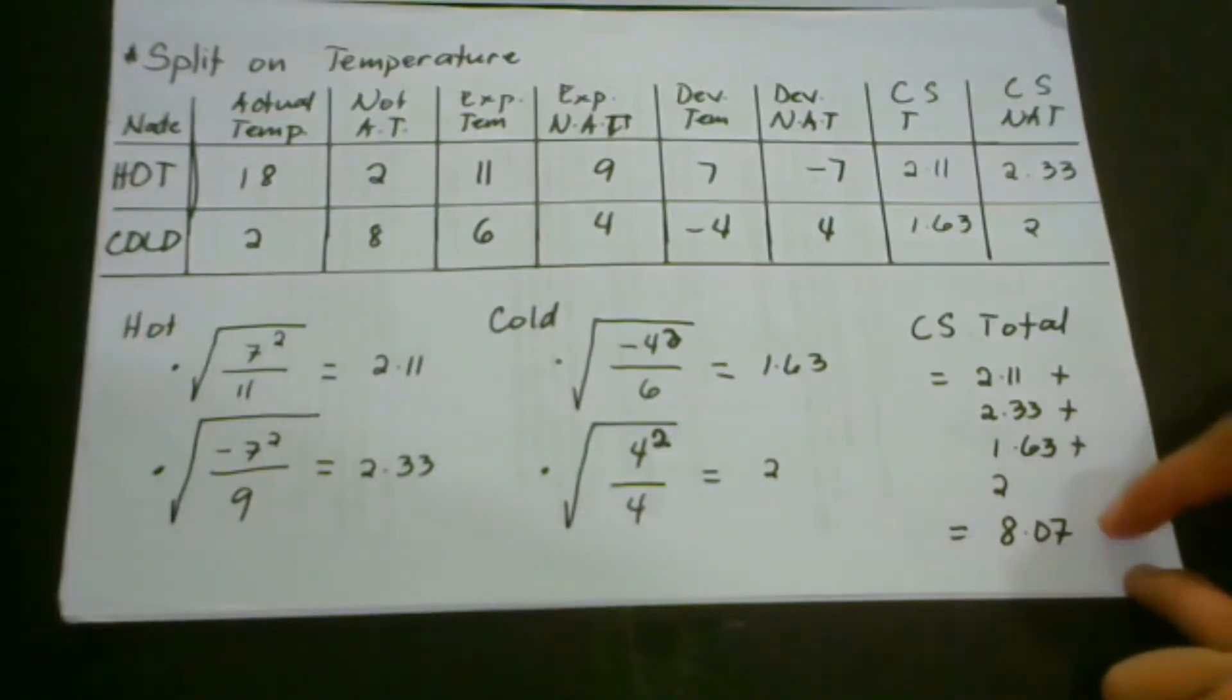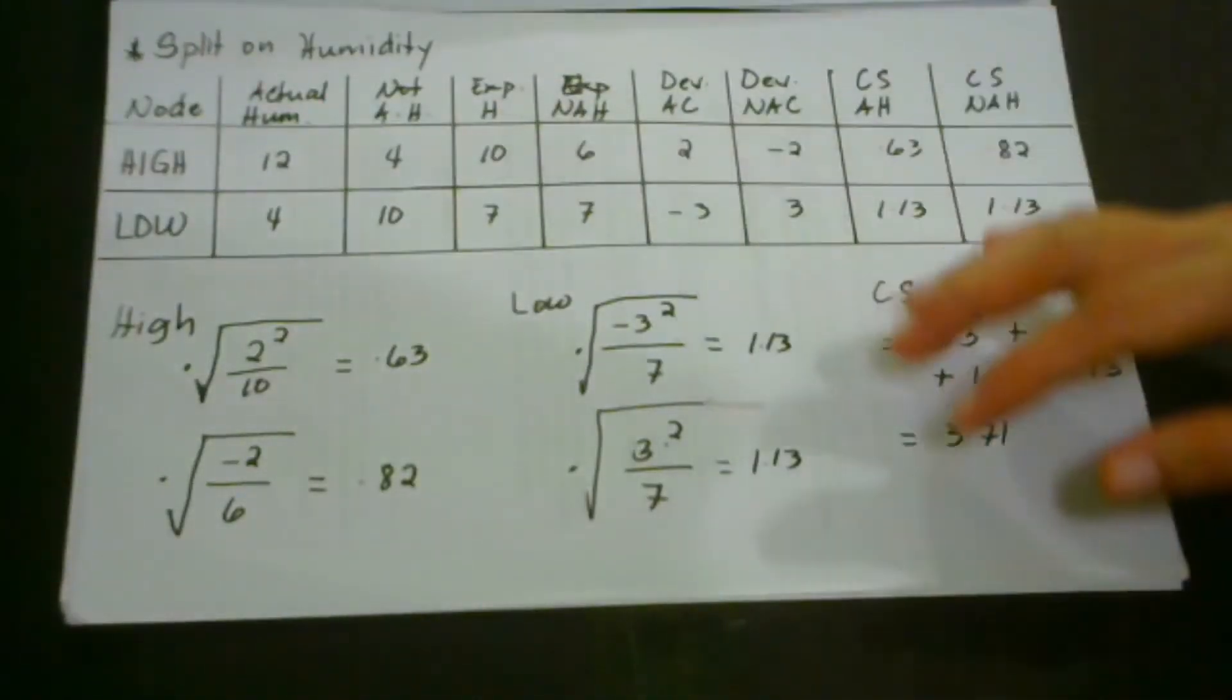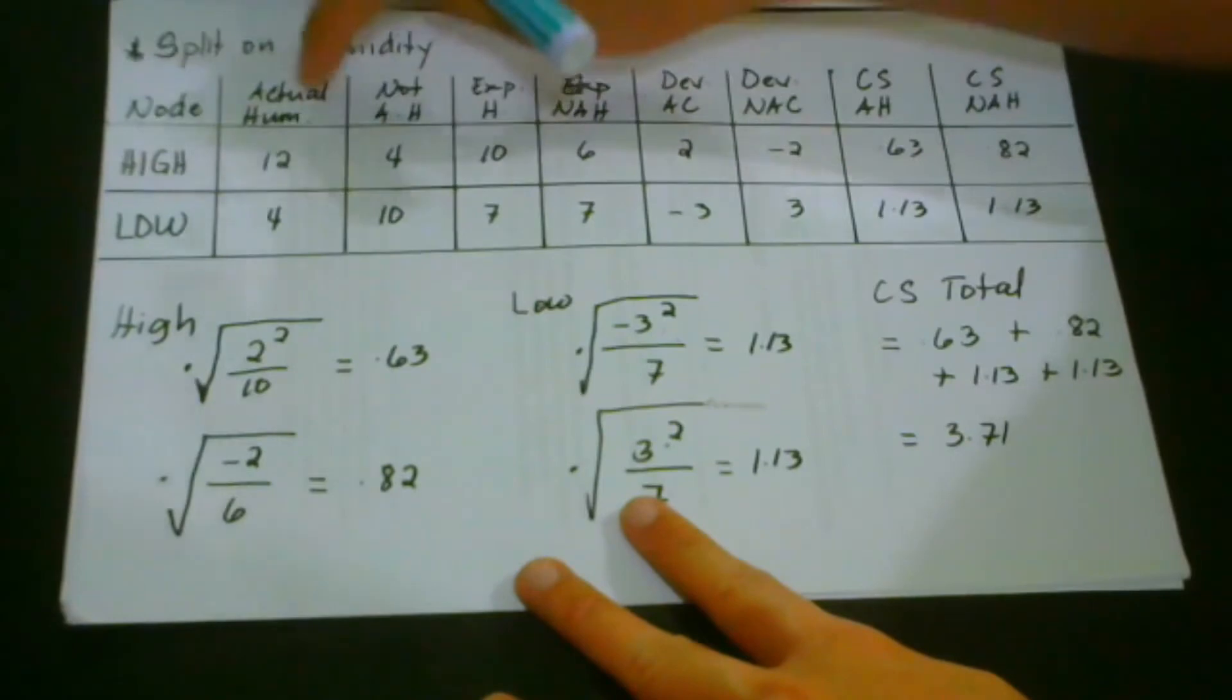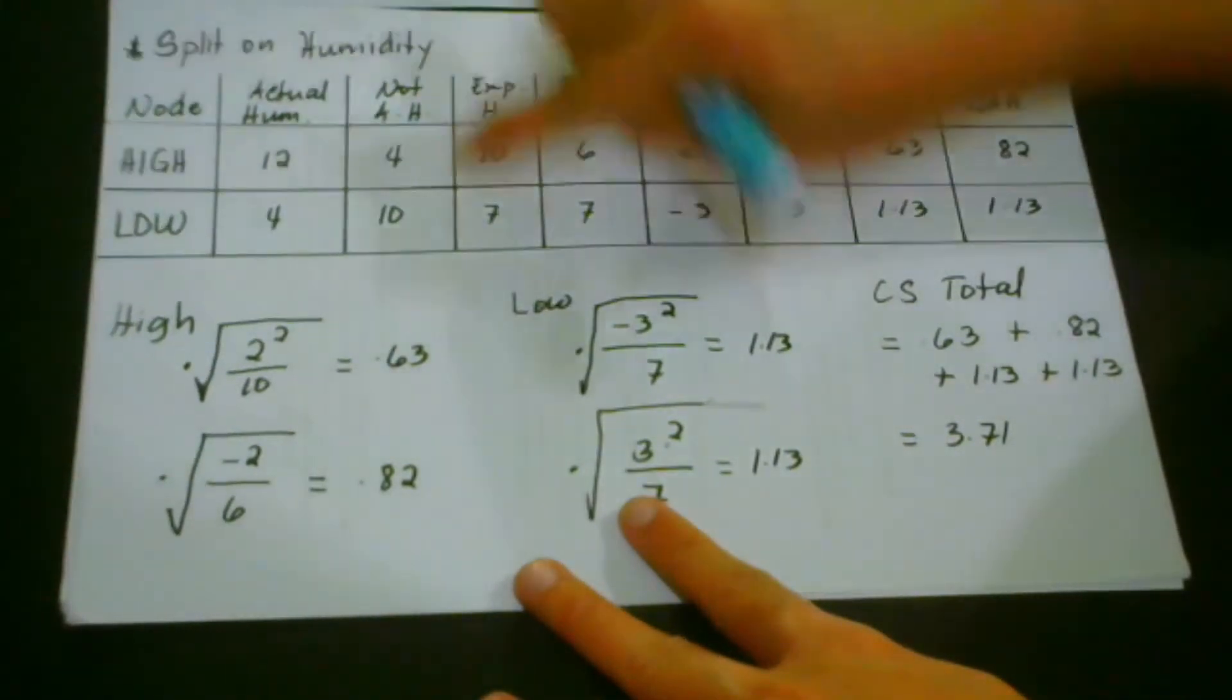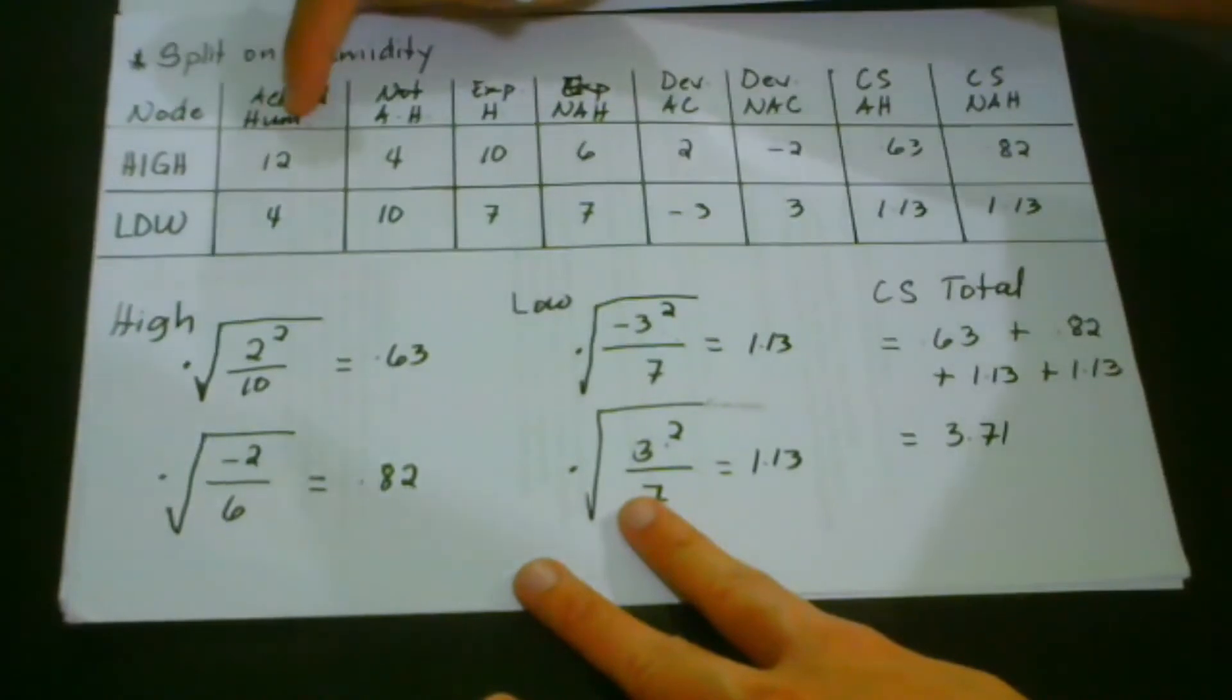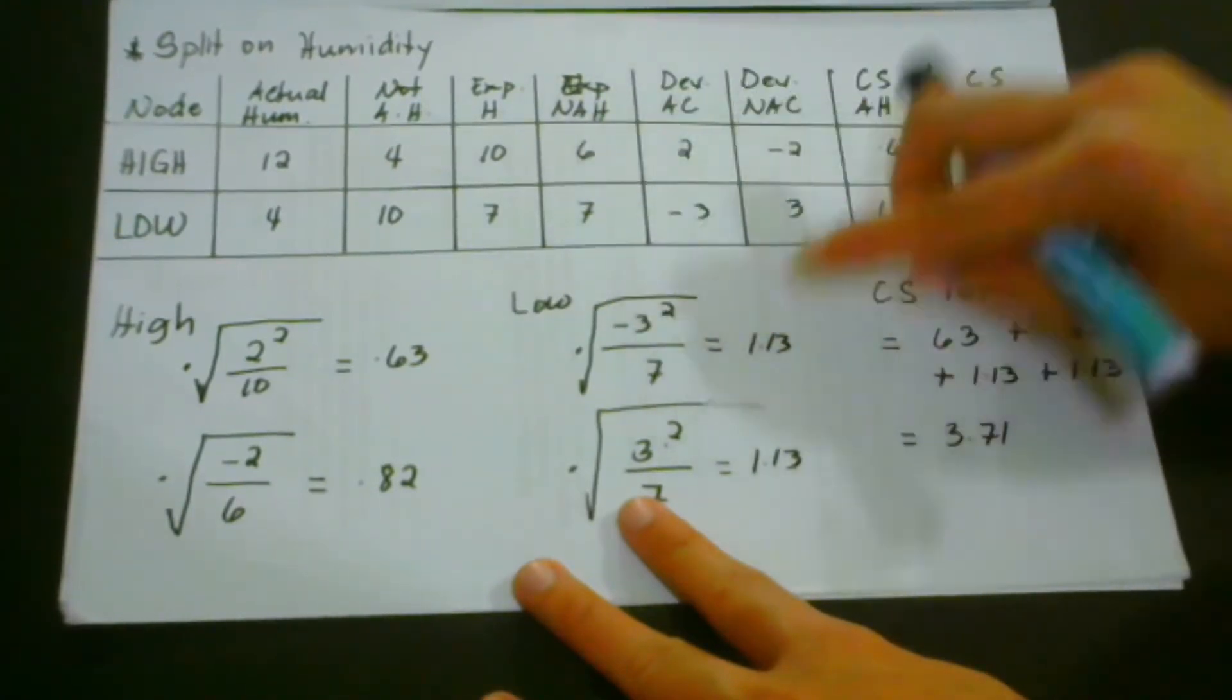And also, we do the same process for the split on humidity. And this one here in this column, we could see the values of the actual humidity for high and the low humidity. And here is not the actual humidity. And we could see here is the expected humidity for the actual humidity, and we have the expected values for the not actual humidity.